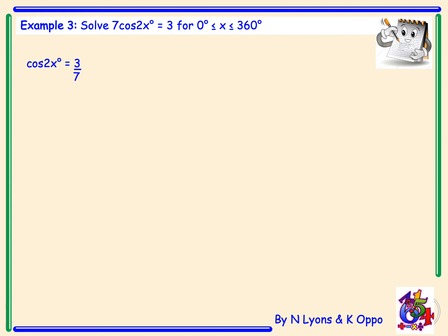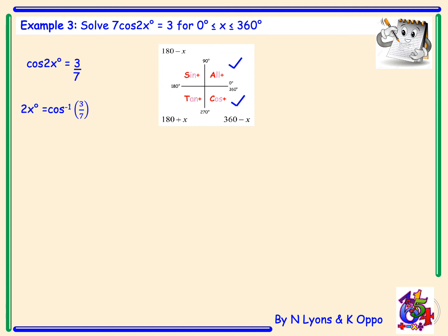We draw the CAST diagram and tick the first and fourth quadrants because cos is positive in these quadrants. The next step is to do inverse cos of 3 over 7 using a calculator, which gives an answer of 64.6 degrees.